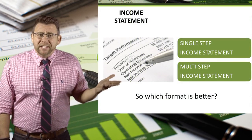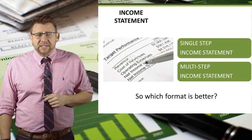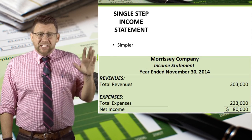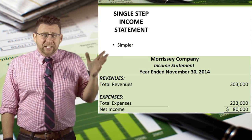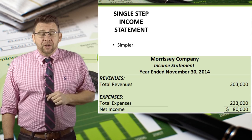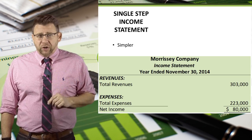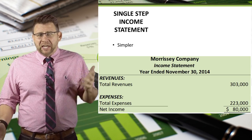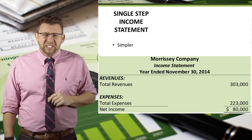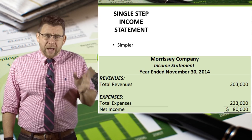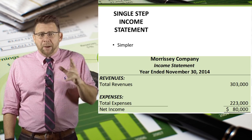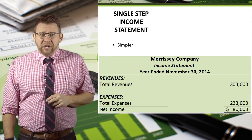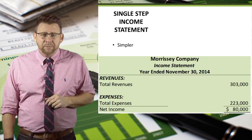So which format is better? Well, it depends. The single-step is easier to read and understand. For service firms, which don't have gross profit and where there isn't a lot of benefit from distinguishing between operating and non-operating activities, it's the simple way to express profitability.